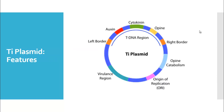The T-DNA region is flanked by border sequences — the left border and the right border. The T-DNA region is responsible for producing growth hormones as well as opines.